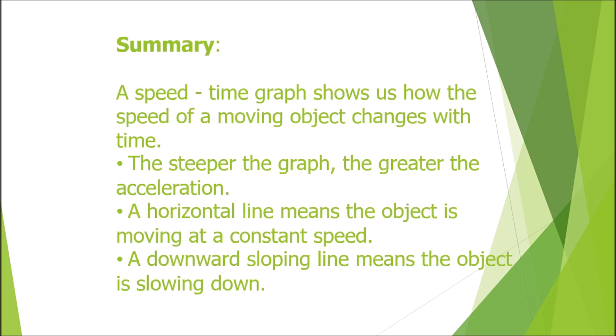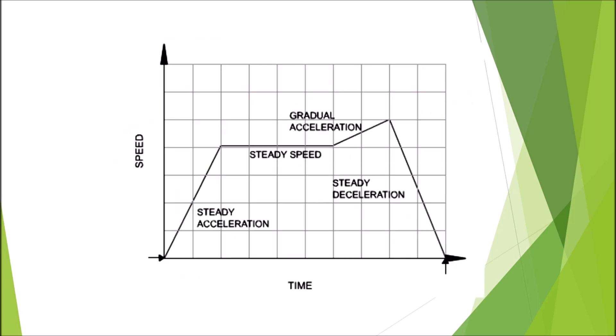Summary of speed-time graphs: a speed-time graph shows us how the speed of a moving object changes with time. The steeper the graph, the greater the acceleration. A horizontal line means the object is moving with a constant speed — not that it is at rest. A downward sloping line means the object is slowing down and coming to a halt.